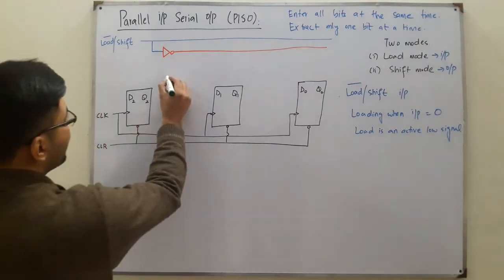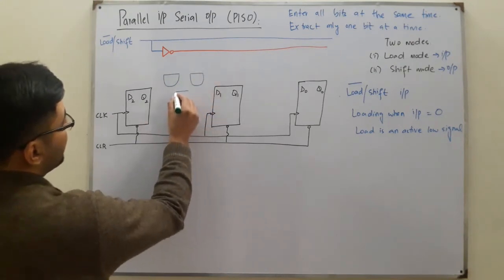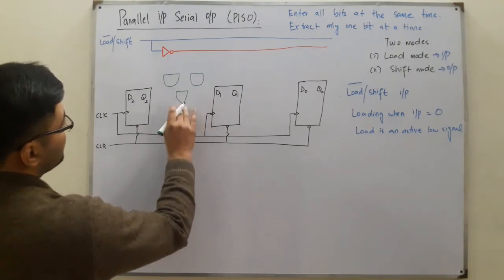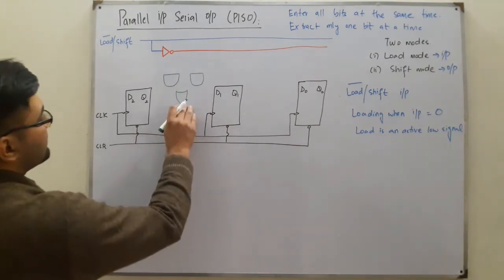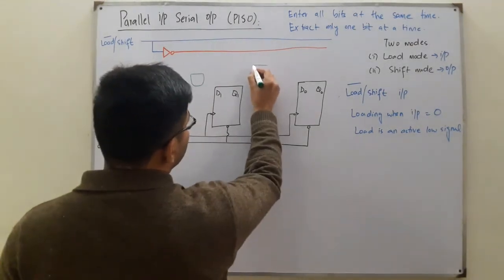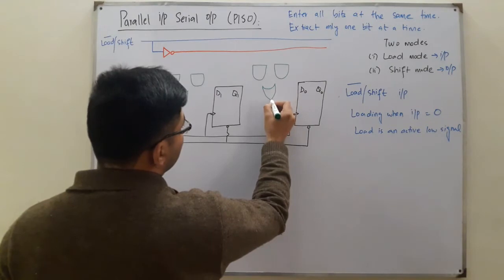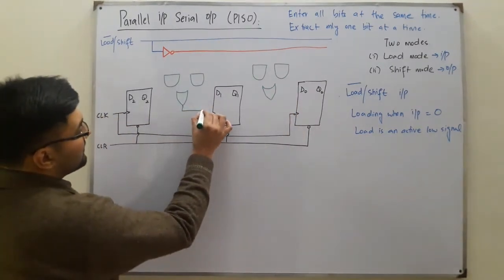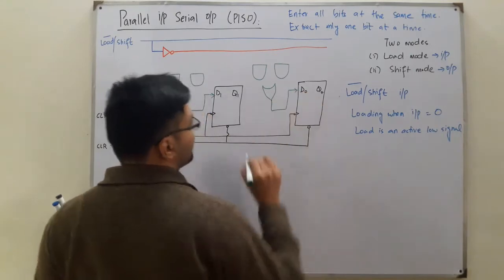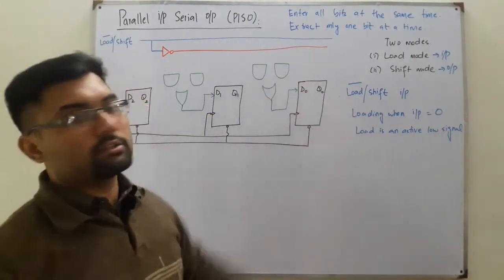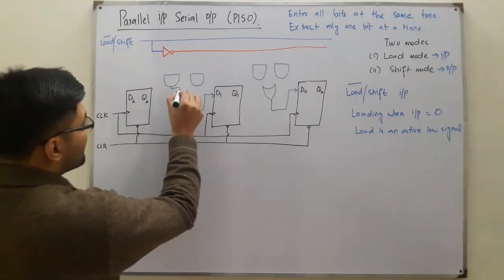We have a combinational circuit between the flip-flops. It consists of two AND gates and one OR gate between each pair of flip-flops. The output of the OR gate is connected to D1, and similarly the next OR gate's output is connected to D0.